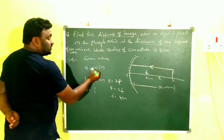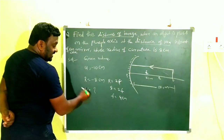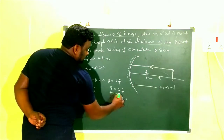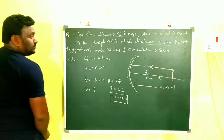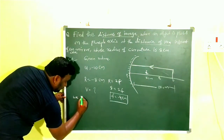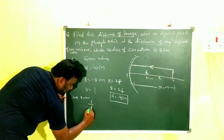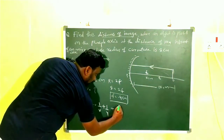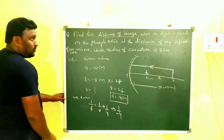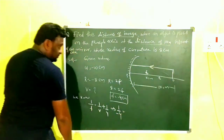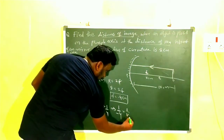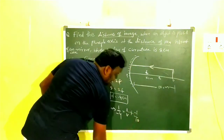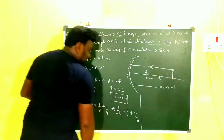So we write: u equals minus 10 centimeters, r equals minus 8 centimeters. Since r equals 2f, we have 8 equals 2f, so f equals 4 centimeters, and taking sign convention into account, f equals minus 4 centimeters. Now we substitute into the mirror equation.